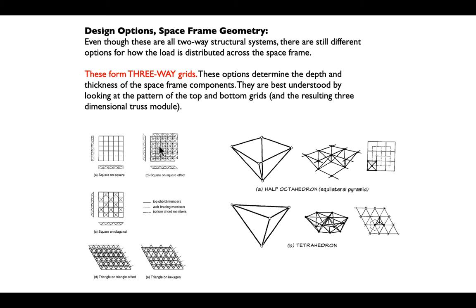So, offsetting the squares, or squares on diagonals, or triangles on triangles, or triangles on hexagons — the more we resolve a space frame into triangular or pyramidal elements, the more fixity we get and the more rigidity we get out of the frame.